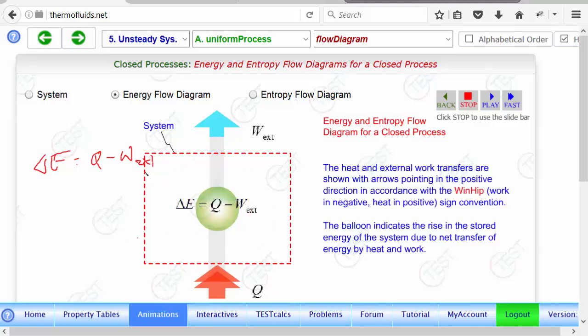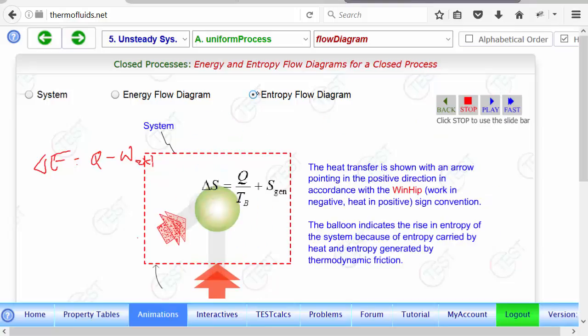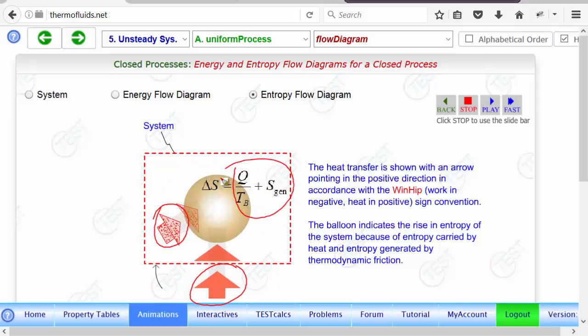Similarly, if you go to the entropy flow diagram, you will see that it shows the intuitive concept, that heat that comes in at the bottom, the heat that is coming in here is carrying entropy. And, of course, friction inside can generate entropy. And, together, that's what they're causing the rise in entropy of the system.